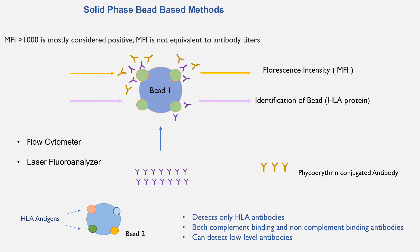This fluorescence intensity is not equivalent to antibody titer — it is a semi-quantitative measure of antibody. A mean fluorescence intensity or MFI of more than 1000 is mostly considered positive. Advantages of this method include that it only detects HLA antibodies, it can detect both complement-binding and non-complement-binding antibodies, and it can also detect low levels of antibodies.